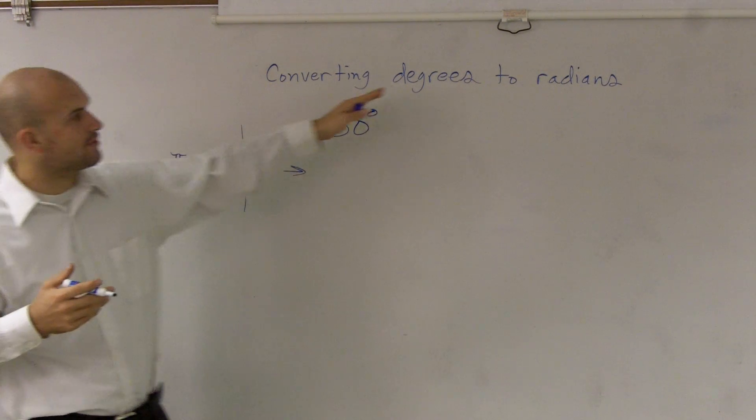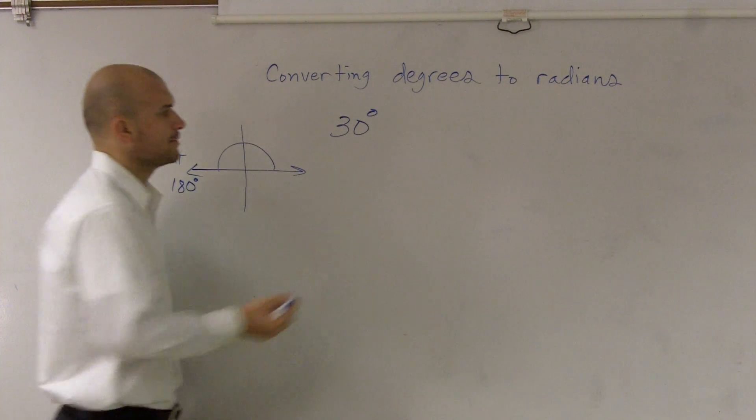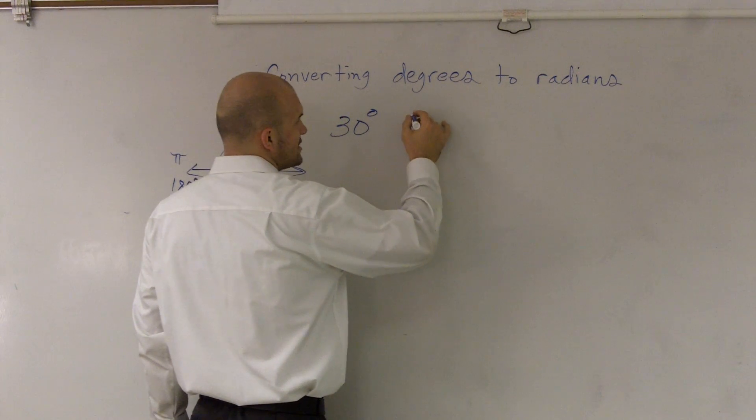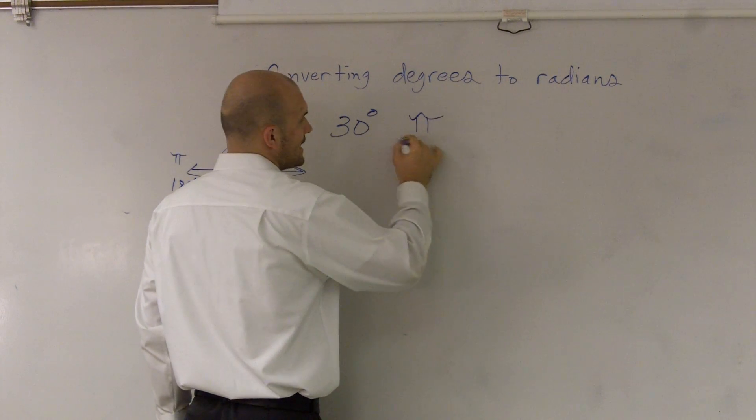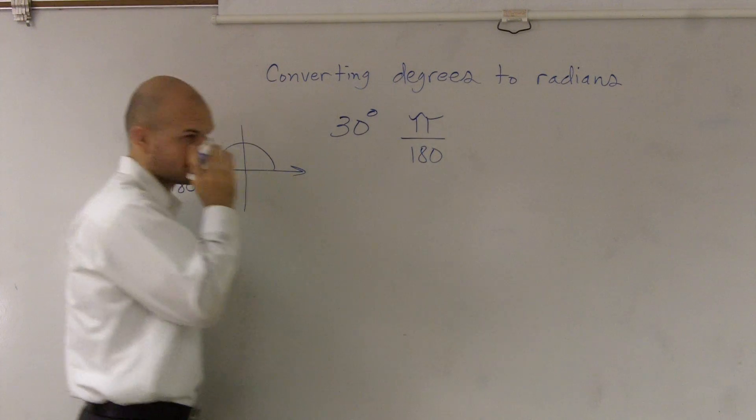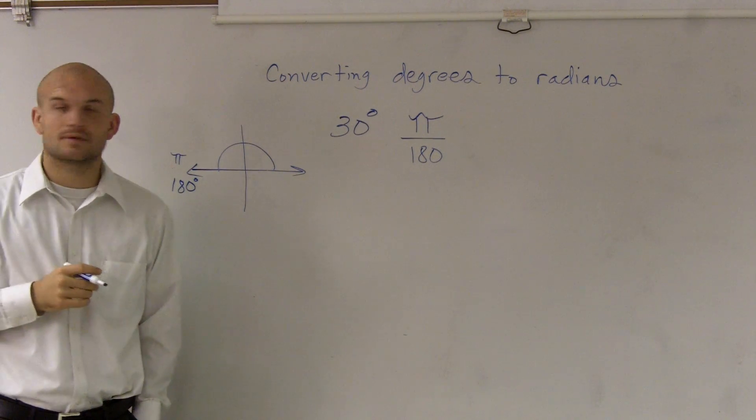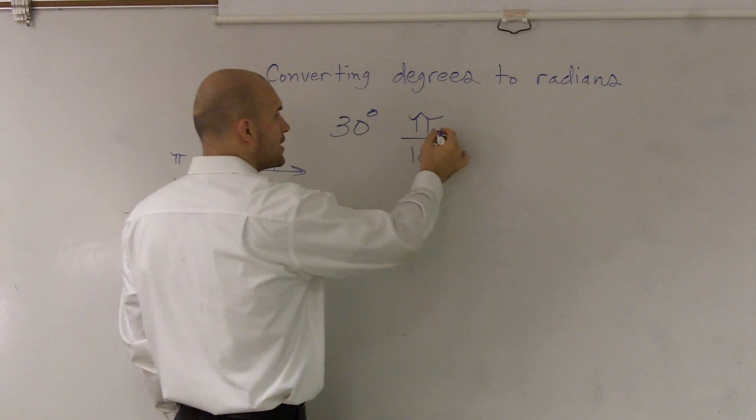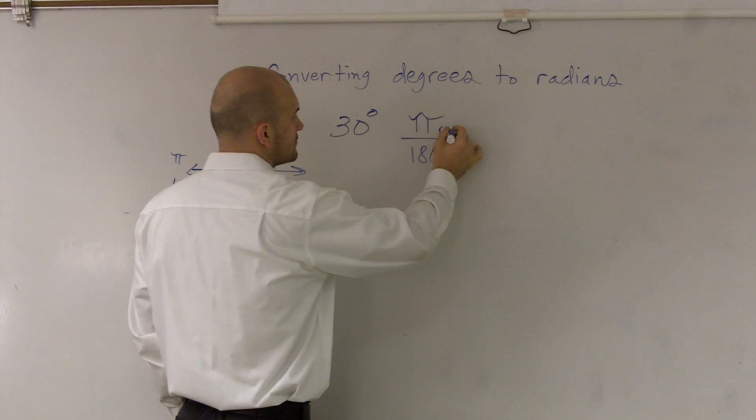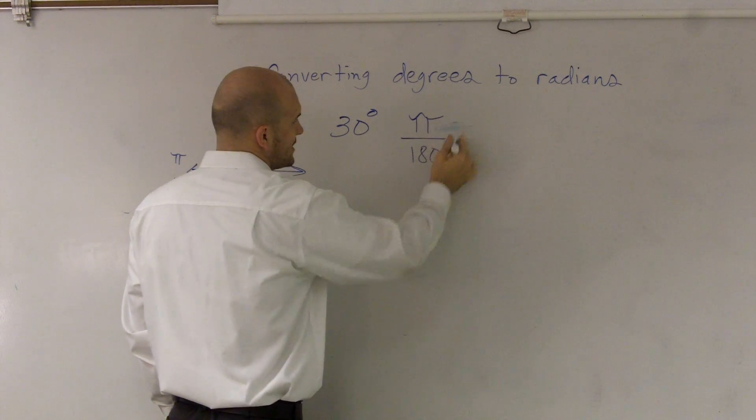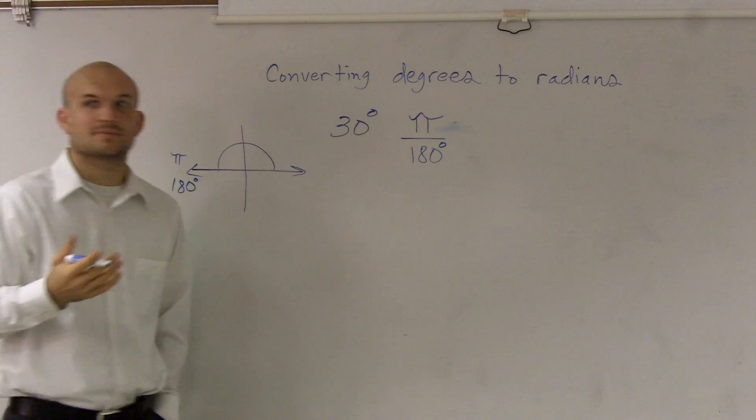So when I want to convert from degrees to radians, I'm going to use that ratio and say pi is to 180. And so this is what we call our radian, and here's what we call our degrees.